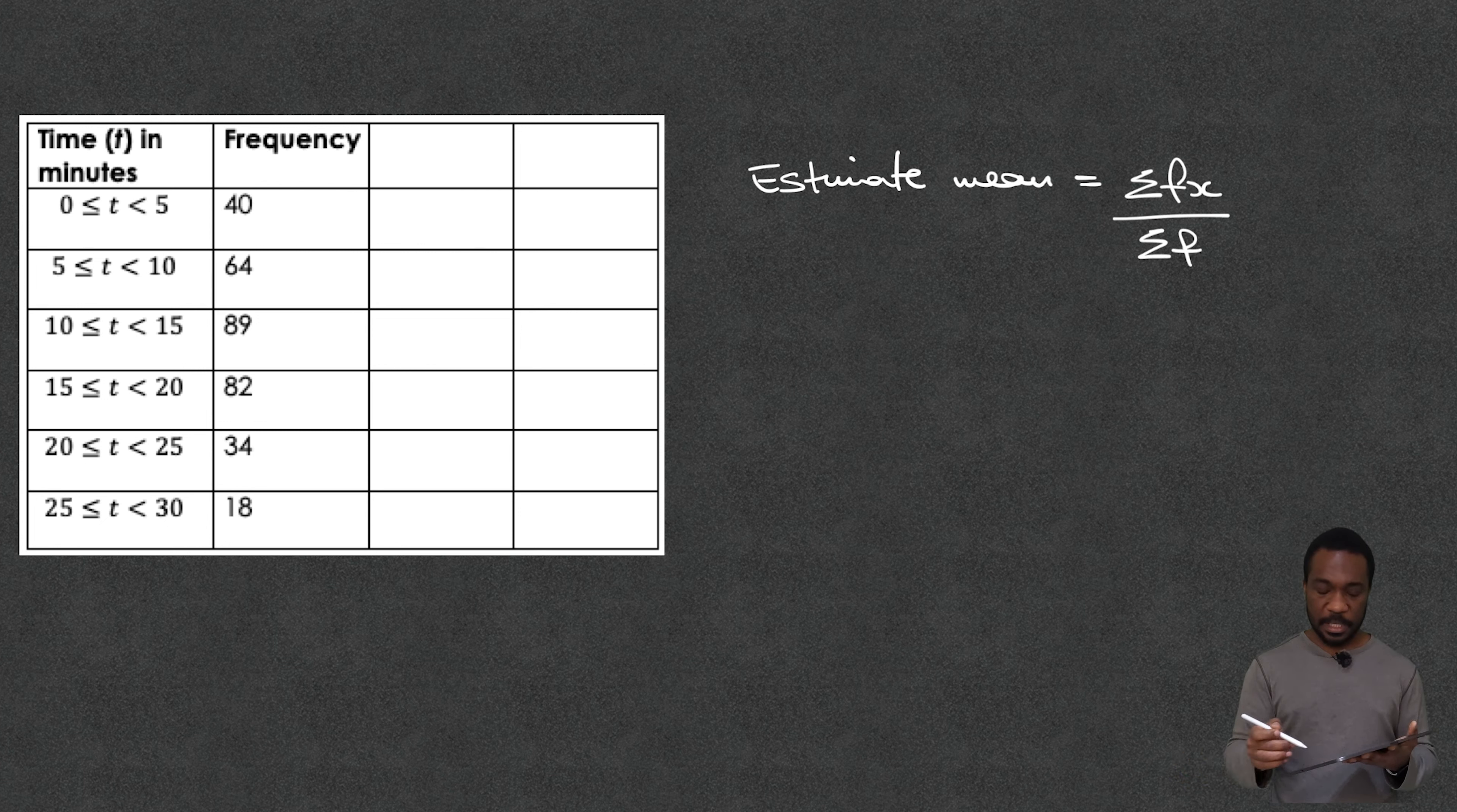Well you can see here the number of times that pizza was delivered for these given times. So you can see 40 times I had a delivery of 0 to 5 minutes, 64 times and so on. So we've gone through all of that already.